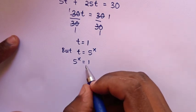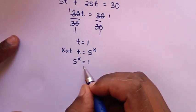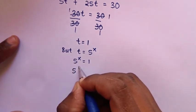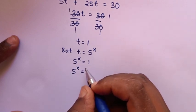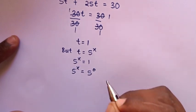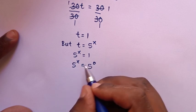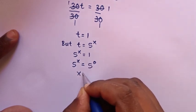In the next step, to have the same base, 1 is the same as 5 power 0. So 5 power x equals 5 power 0. Comparing the same base with different powers, x equals 0.